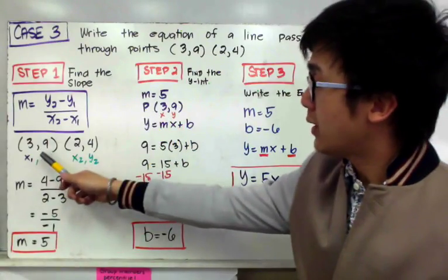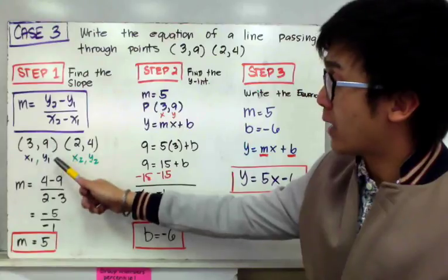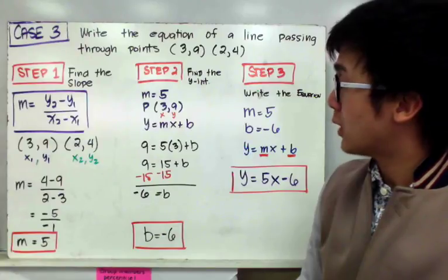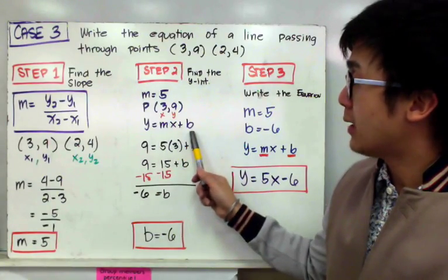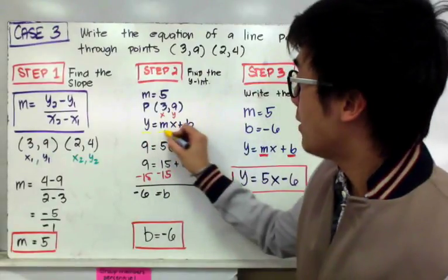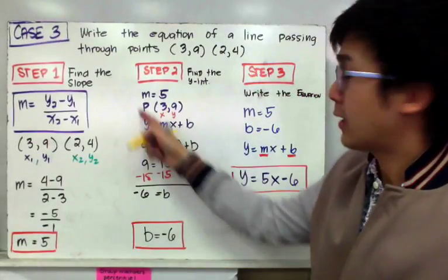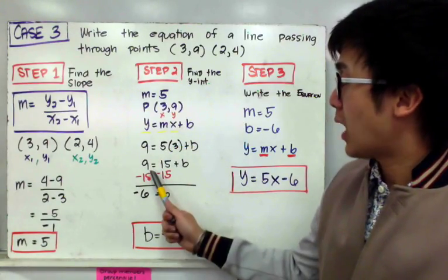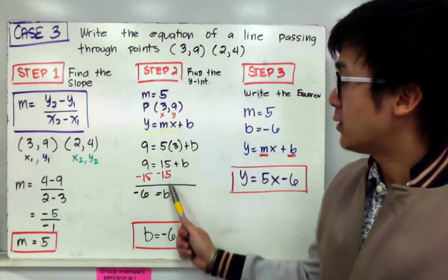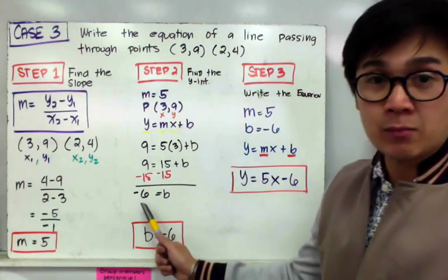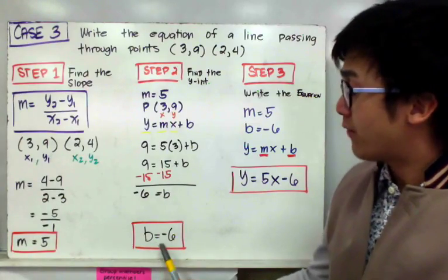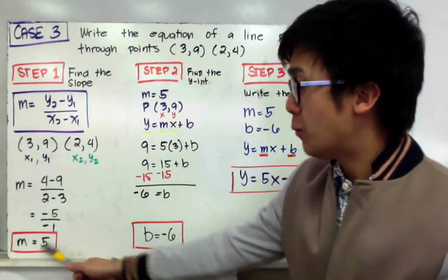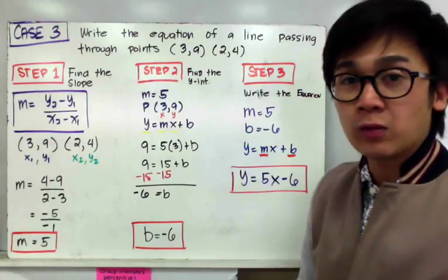I chose (3, 9) as the point to use to find my y-intercept. By direct substitution into y = mx + b, I replace y, m, and x with these values: 9 equals 5 times 3 plus b, which gives me 9 equals 15 plus b, so b equals negative 6 by subtracting 15 from both sides. I've found my y-intercept: b = −6. Now that I have my slope and y-intercept, I am ready to write the equation of a line.